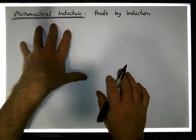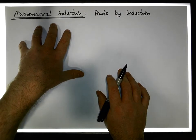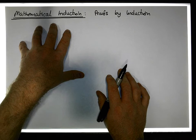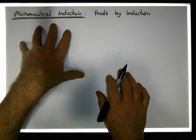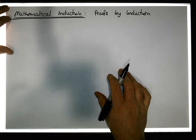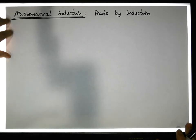Induction works well where you want to prove that one identity is equal to another identity. But we can also use direct proofs, and we can use proofs by contradiction, which we have seen in other videos.